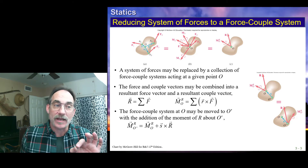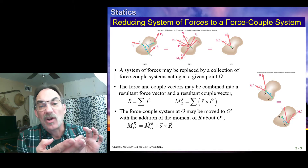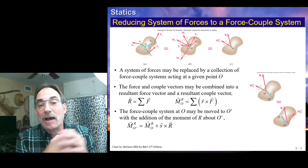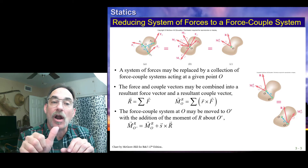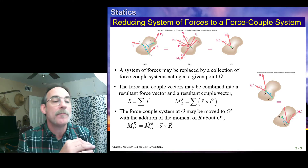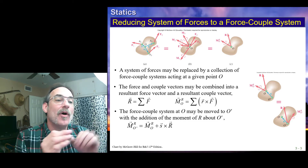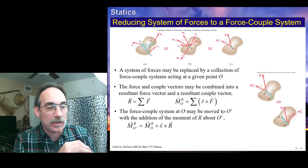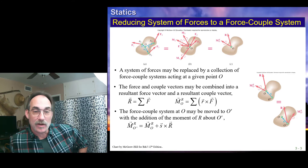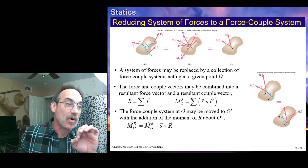We take S cross that force R, and that gives us the moment that force causes about point O prime. We also have the original moment M at point O, which moves. So when computing the equivalent force system, we take all the forces and put them at the new point — that's R. We take the moments and put them at the point, and also take S cross R and add that to the moment to get the new moment about point O prime. The moment about O prime is simply M about O plus S cross R.